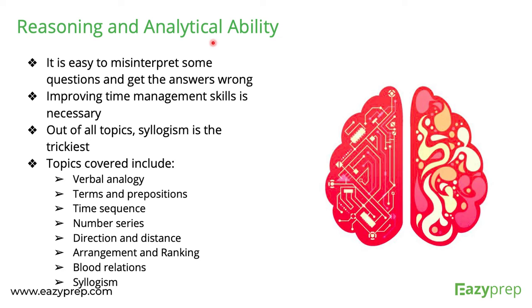Reasoning and Analytical Ability is a relatively easier section, but it becomes difficult for some because it's very tricky — questions are easy to misinterpret, and if you misinterpret them you'll solve them incorrectly. This section also consists of caselets, with each caselet having 4–5 questions attached. Additionally, this section is relatively time-consuming, so time management skills are necessary.